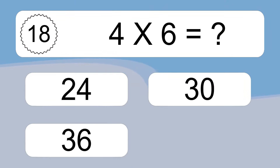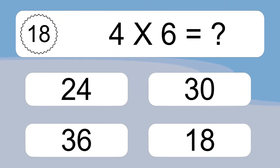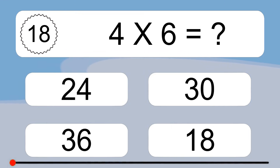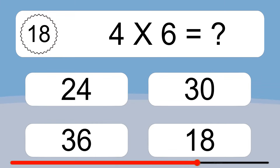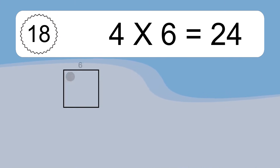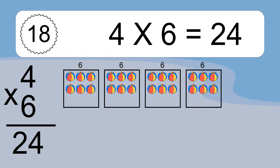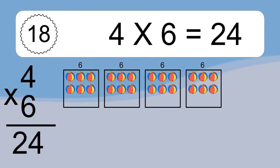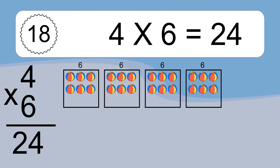4 times 6 equals what? 4 times 6 equals 24. We have 4 boxes, and each box has 6 colorful balls inside. If you count all the balls in all the boxes together, you will have 4 times 6 balls. This equals 24 balls.